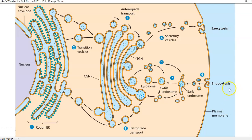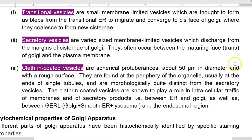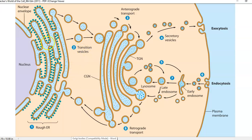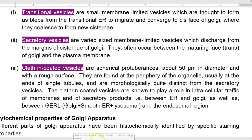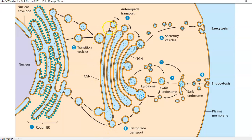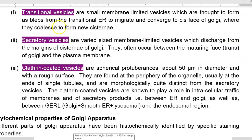We can see these vesicles in the diagram. The transition vesicles are those at the phase of transition, whereas the secretory vesicles are destined to reach the plasma membrane surface to exude synthesized protein outside through the process of exocytosis. Transitional vesicles are small membrane-limited vesicles thought to form as blobs — a bubble-like appearance — from the transitional endoplasmic reticulum. They migrate and converge with the cis phase of the Golgi, where they coalesce to form new cisternae.